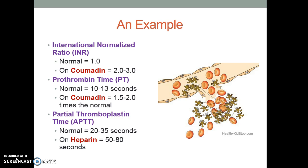When you have patients on anticoagulants, there are specific parameters to monitor. For Coumadin, you monitor the PT and the INR. A normal PT is 10 to 13 seconds. On Coumadin, you're looking to have one and a half to two times normal on your PT, and for the INR, two to three times normal. Those are usually the targets. An INR of one is normal, but if someone is on Coumadin, the expectation is the INR will be between 2.0 and 3.0.